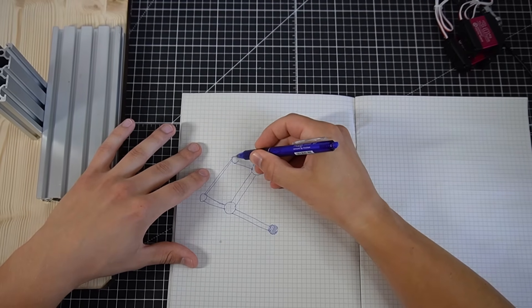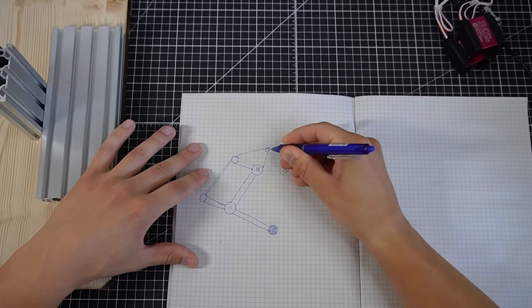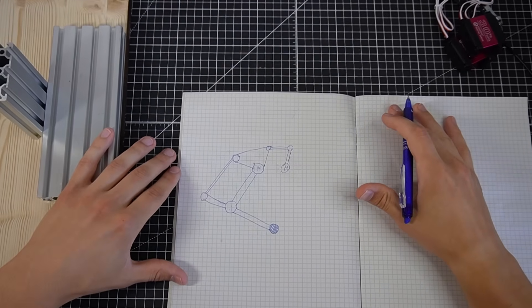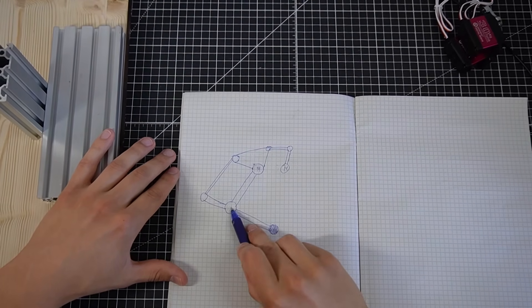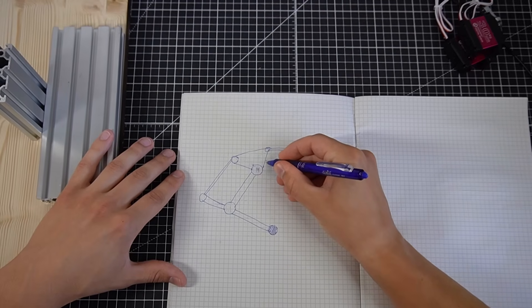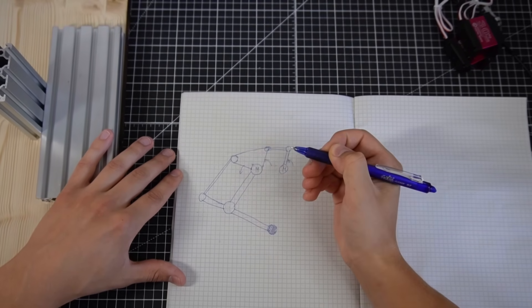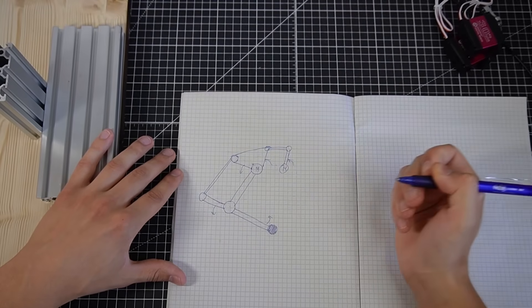Instead of this rod, I'm gonna make a whole part out of this. And the linkage is finished. If we want to move this joint, we just move this motor. The angle gets copied here. Since this is just one part, it gets copied here, it goes here and it moves the foot.